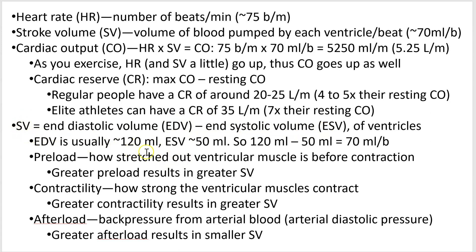Here are some rough numbers. End diastolic volume is usually around 120 mils. End systolic volume is around 50. So 120 minus 50 is about 70, which gives you 70 milliliters per beat.